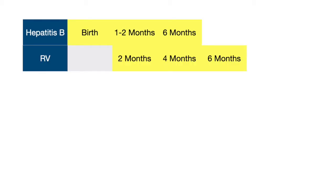Next we have the rotavirus vaccine, which is actually an oral vaccination, so it's given as a drop in the mouth, and this is given at two, four, and six months. Make sure to keep in mind two, four, and six months when thinking about pediatric vaccinations, because this is when a majority of those vaccines are administered.